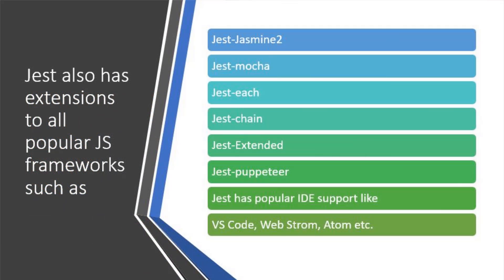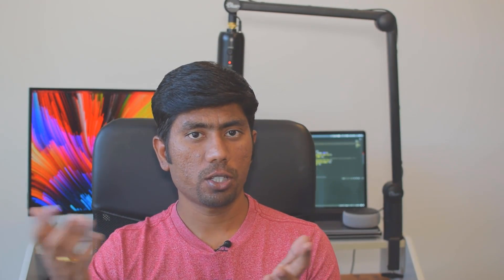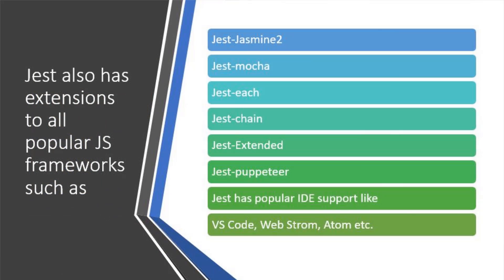There are different kinds of extensions available for Jest — something like Jest with Jasmine, called Jest-Jasmine2, and Jest with Mocha, called Jest-Mocha. There is also Jest-Each, Jest-Chain, and Dexter Standard. For Puppeteer, there is an extended plugin called Jest-Puppeteer. Jest also has popular IDE support including VS Code, WebStorm, and Atom. Jest is really popular in the community with a lot of support available. So the tools to focus on this year are Jest and Puppeteer.